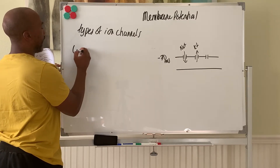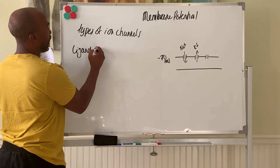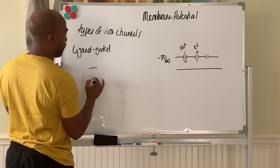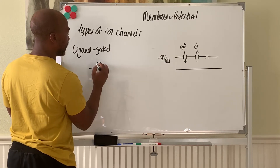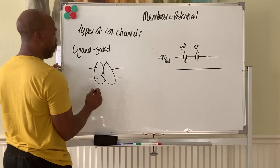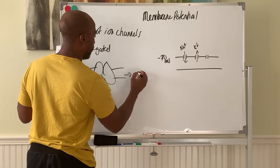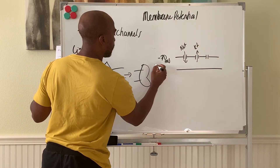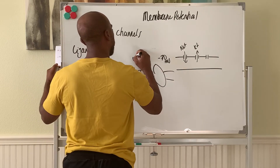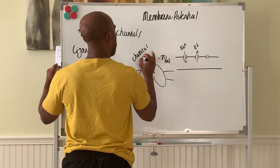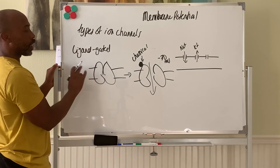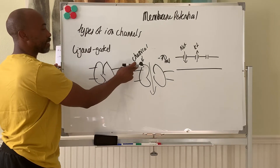You have your ligand-gated channels. Here you have a gate in the membrane, and this gate is closed. It will open if something binds to the gate — usually a chemical we call a ligand binds to the gate, and that opens it. So we call it a ligand-gated channel: open and closed based on the presence of a ligand attached to the gate.